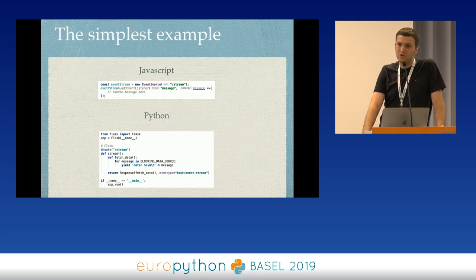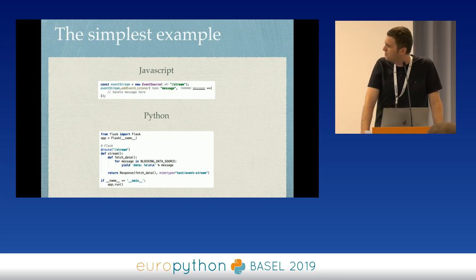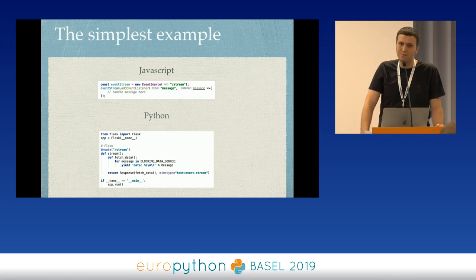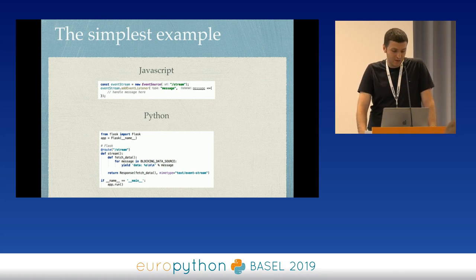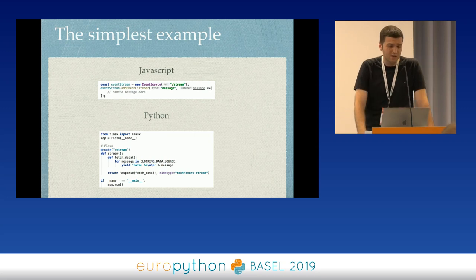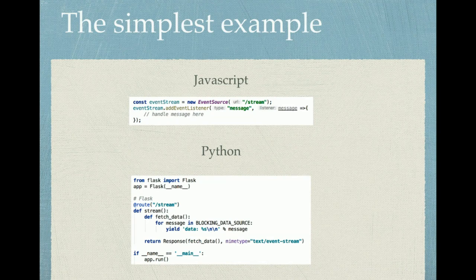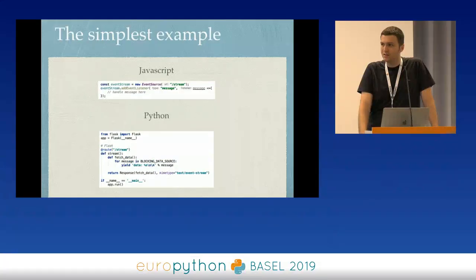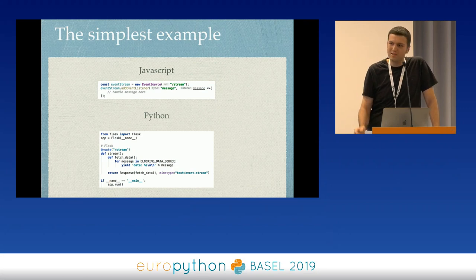This is the simplest Python Flask example I could find, but it's deliberately not working — I wrote a blocking data source because the example where you have a while-true loop just echoing messages is an anti-pattern. With this type of service you should obviously get data from somewhere, like a queue, Redis, or Kafka — a message queue. Or even your database if you fancy doing that; there may be use cases for that.